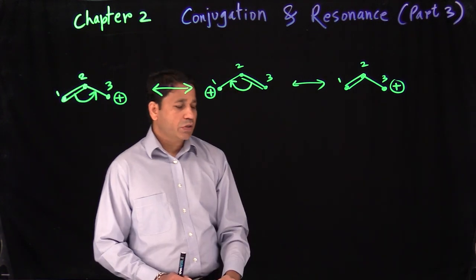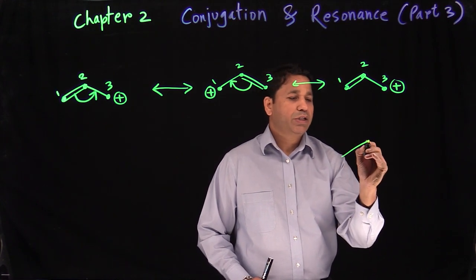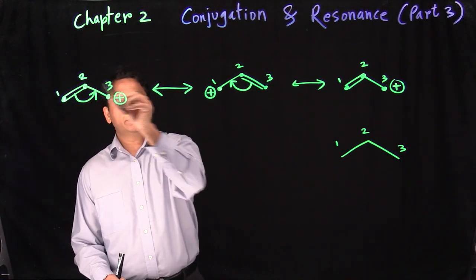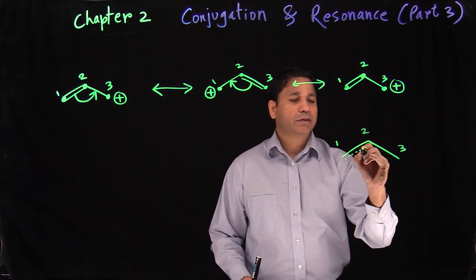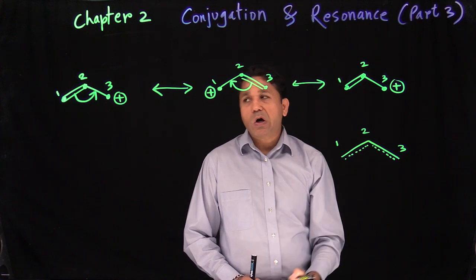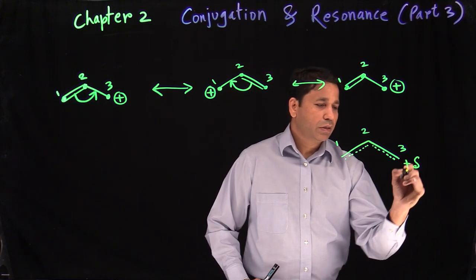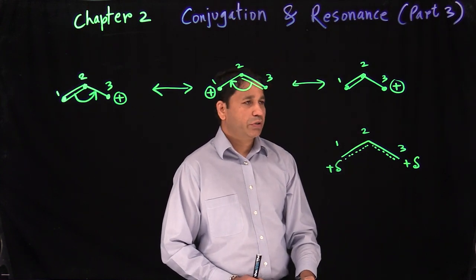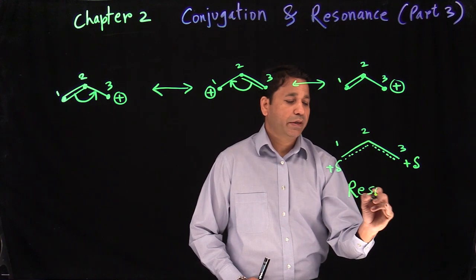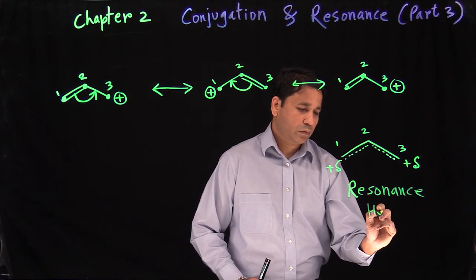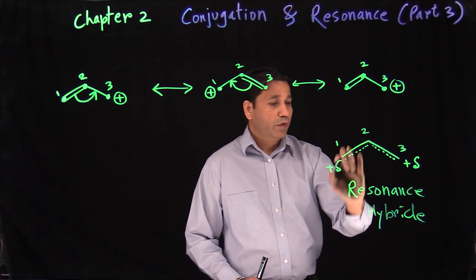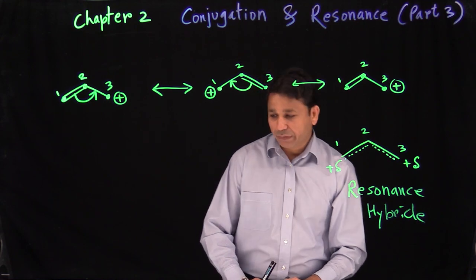When you write a resonance structure, we can also show a general structure — a resonance hybrid. We have carbon one, two, and three, and we show a dotted line indicating electrons are moving among these three carbons. Which carbons have the charges? Carbon three has a partial positive charge 50% of the time, and carbon one has a partial positive charge 50% of the time. This is called the resonance hybrid — it shows the overall picture of where we are moving electrons and which carbons have the charges.